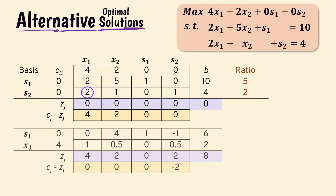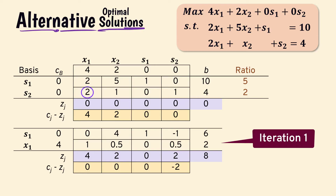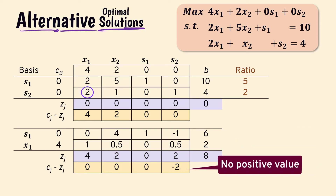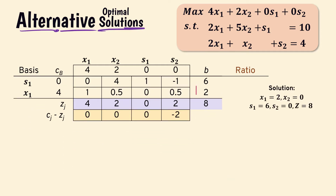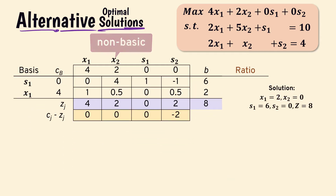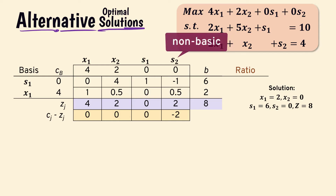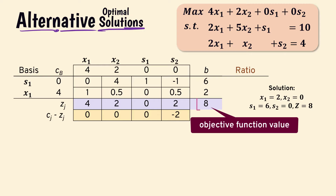At the first iteration, we reach an optimal solution as there are no positive values in the net evaluation row. The solution is x1 equals 2, x2 equals 0, s1 equals 6, and s2 equals 0, with an objective function value z of 8.